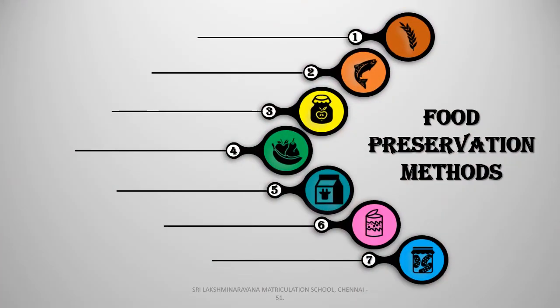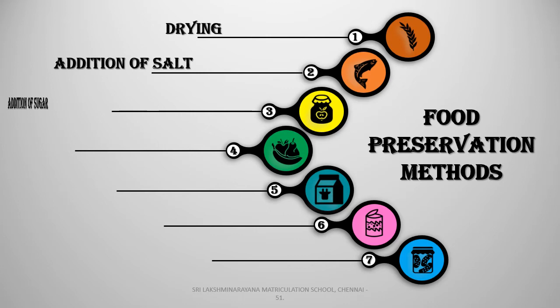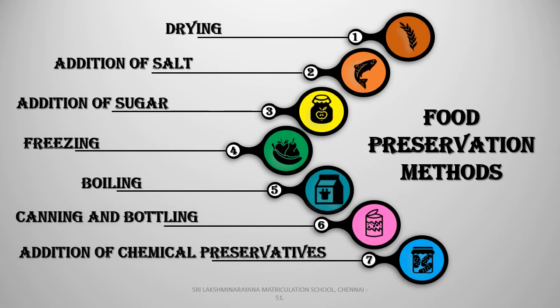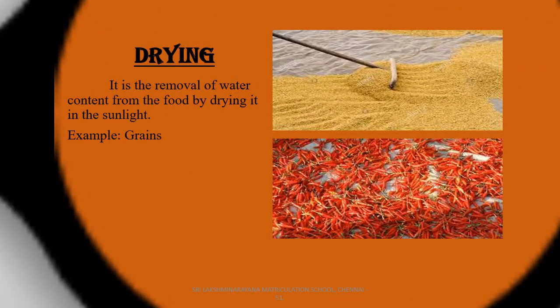Food preservation methods: we use different methods to preserve food. They are drying, addition of salt, addition of sugar, freezing, boiling, canning and bottling, and addition of chemical preservatives. In the drying method, we dry the food in sunlight, which removes the water content in the food. Examples include grains, dry fish and red chilies.